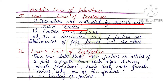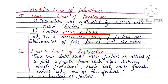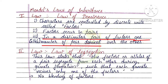The first point: characters are controlled by factors, and characters are passed on through generations. The second point: factors occur in pairs. The third point: in a dissimilar pair of factors, one member of the pair is dominant over the other. This is actually the Law of Dominance.